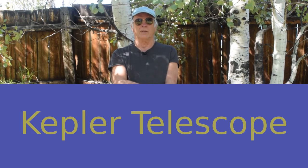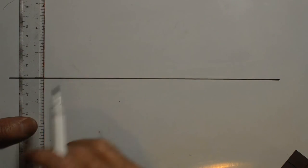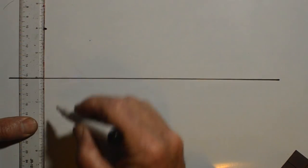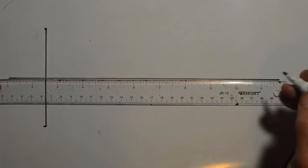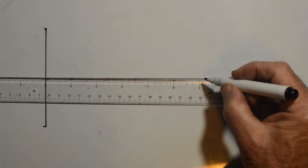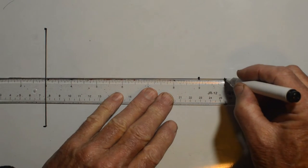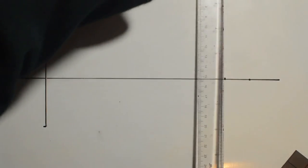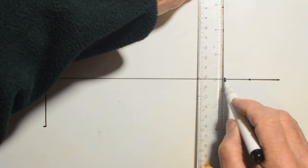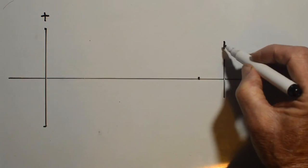Here is the Keplerian telescope invented in the 17th century. And we'll give it a 6 inch focal length here, and a 1 inch focal length here. These are both plus, these are both convex lenses.